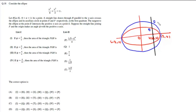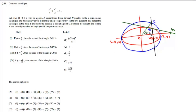The tangent to the ellipse at point E intersects the positive x-axis at point G. The straight line joining F and the origin makes an angle φ. We need to find the area of triangle FGH for different values of φ.